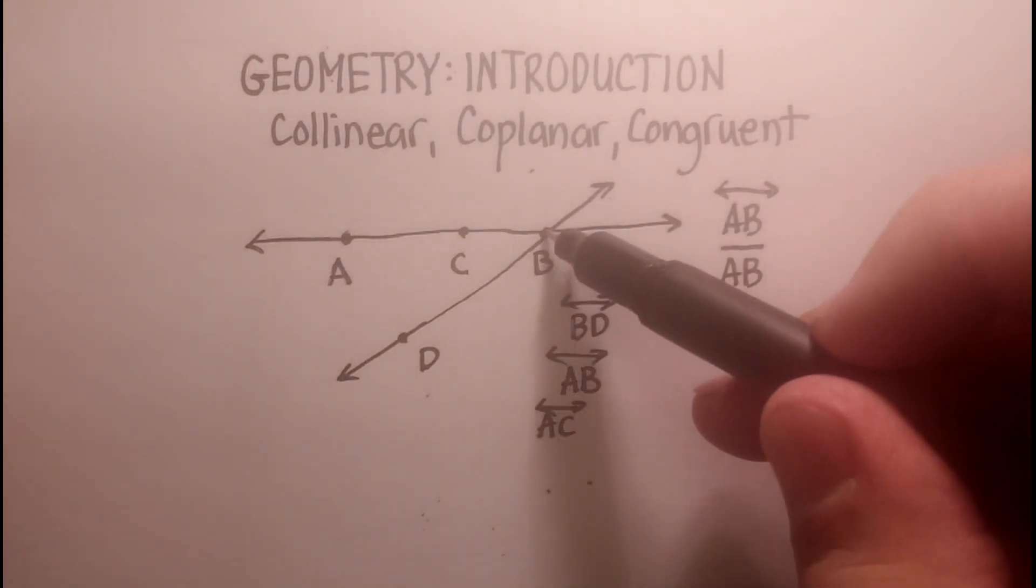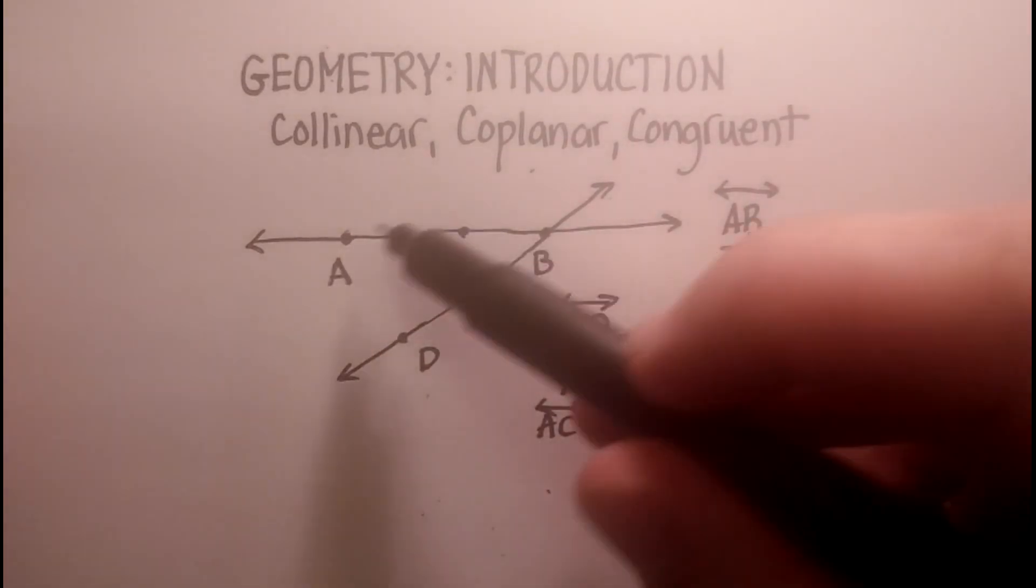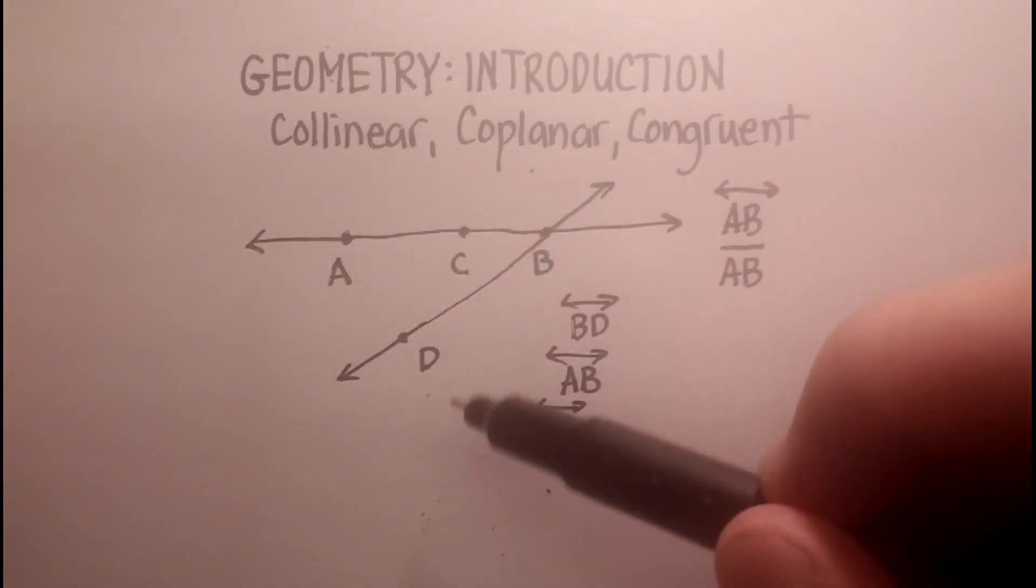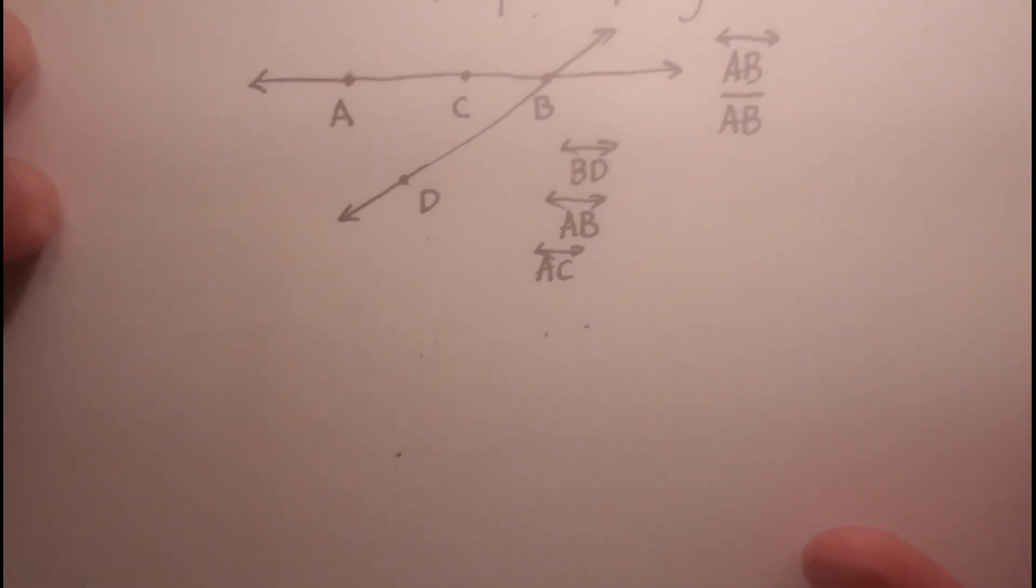So B is the only point that's collinear as it's drawn with all three of the other points. D is not collinear with A, D is not collinear with C, unless I draw more lines. So that's the first concept that I want you to pay attention to.